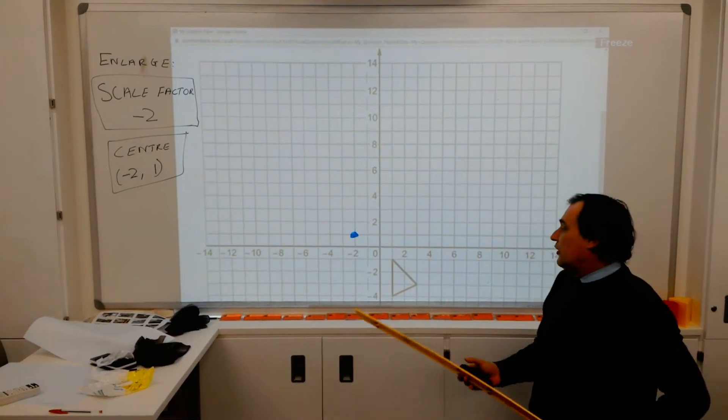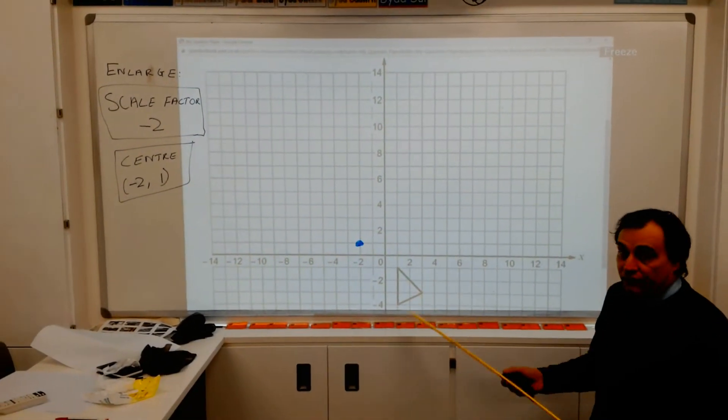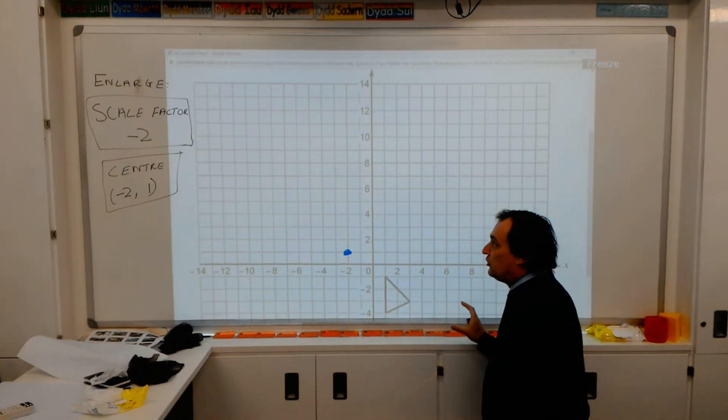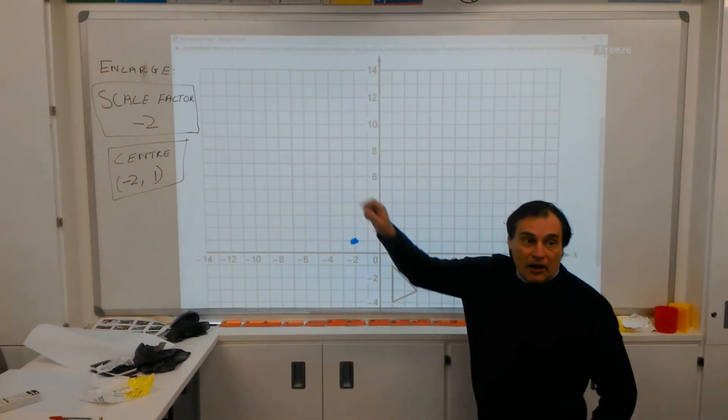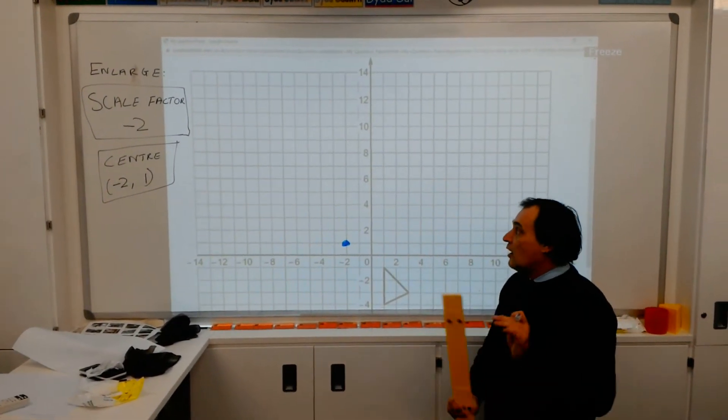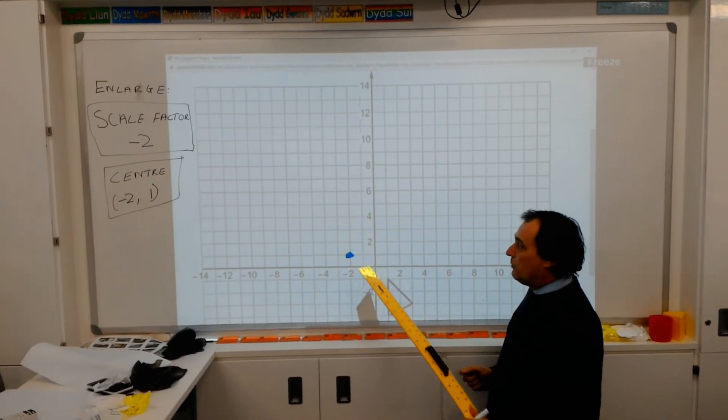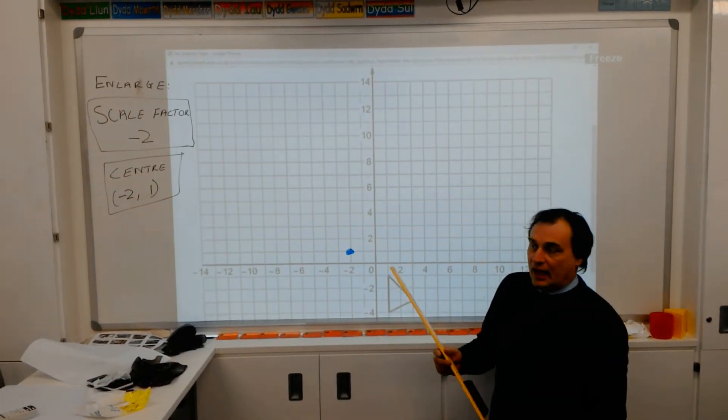Now, for each of the points on the triangle, I'm going to mark them off one by one, and we're going to project them through that centre by a scale factor of minus 2. So all that means is the triangle is going to be twice as big on the other side of that dot.